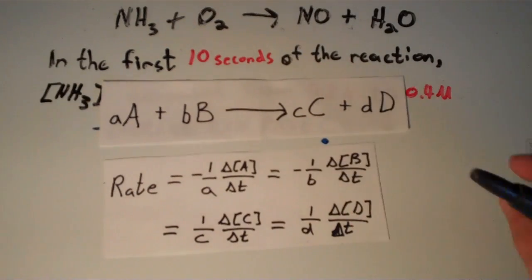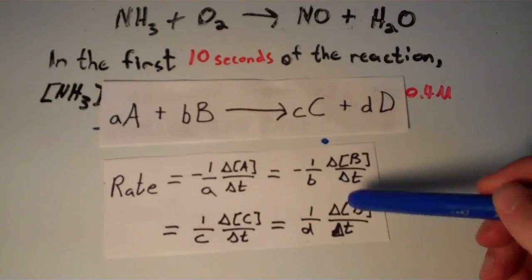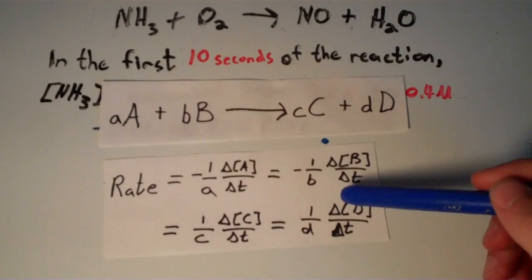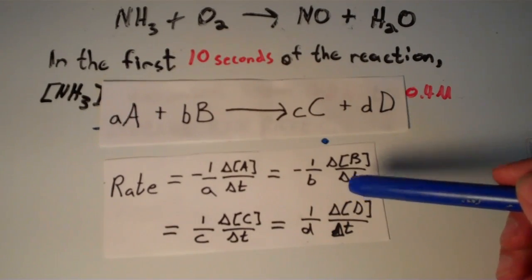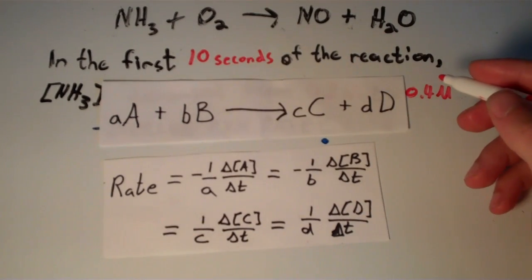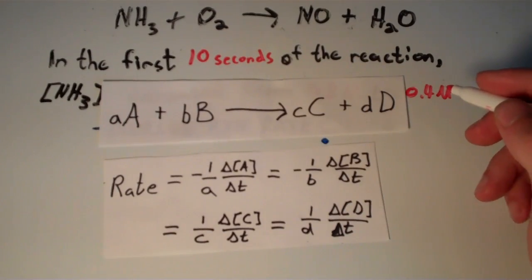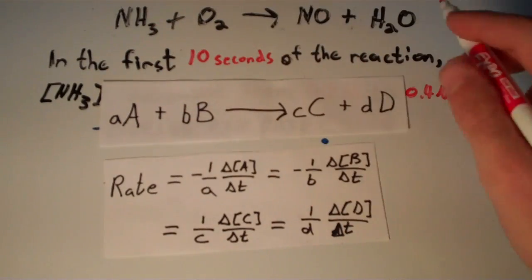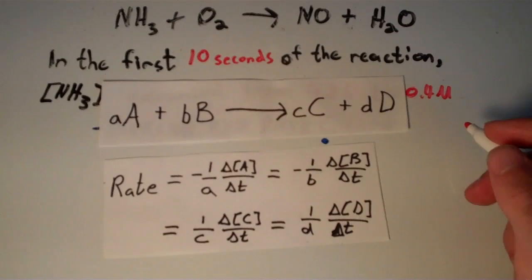So one thing we should point out here is that these two equations apply to the balanced chemical equation for the reaction. So if we look at this equation, NH3 plus O2 yields NO plus H2O, is that equation balanced? Are the coefficients 1, 1, 1, and 1? No, they're not.